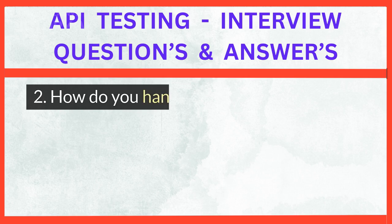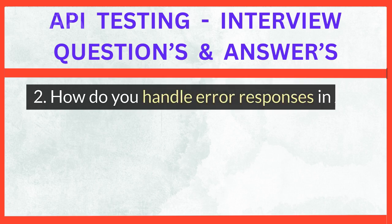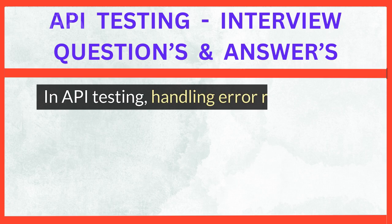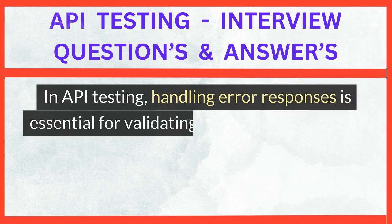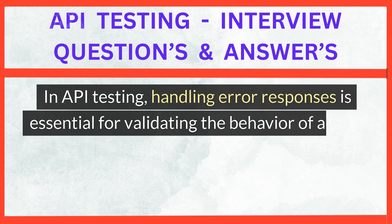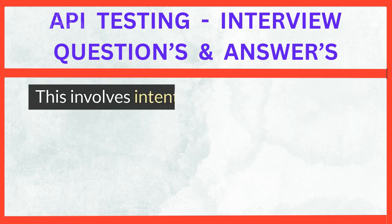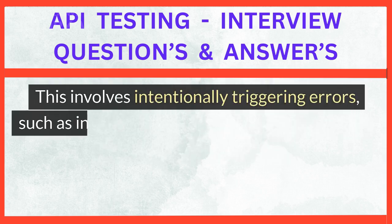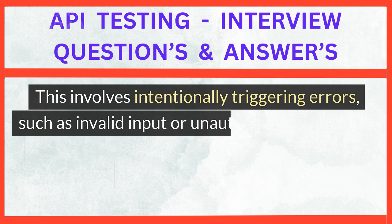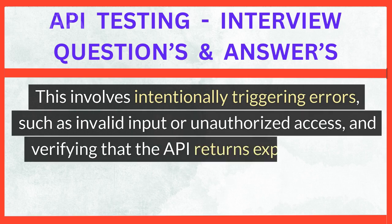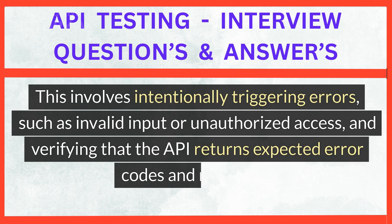How do you handle error responses in API testing? In API testing, handling error responses is essential for validating the behavior of an API under adverse conditions. This involves intentionally triggering errors, such as invalid input or unauthorized access, and verifying that the API returns expected error codes and messages.